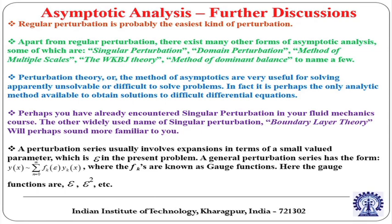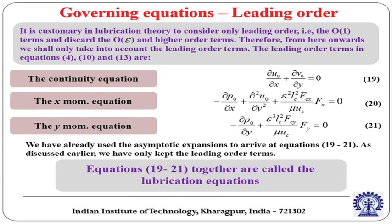Perhaps you have already encountered singular perturbation in your fluid mechanics course. The other widely used name, boundary layer theory, will perhaps sound more familiar — but singular perturbation is a general mathematical treatment and boundary layer theory is a special case of its application. A perturbation series usually involves expansions in terms of small-valued parameters, which is epsilon in the present problem. A general perturbation series has the form y equals summation of f_k(epsilon) times y_k(x), where f_k are known as gauge functions — here the gauge functions are epsilon, epsilon squared, epsilon cubed, and so on.